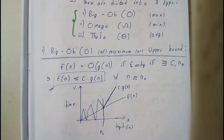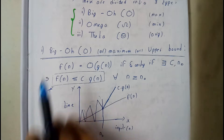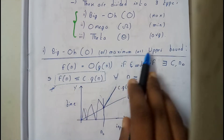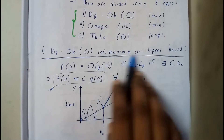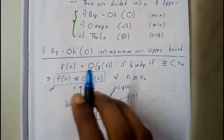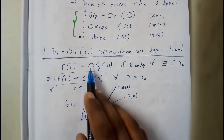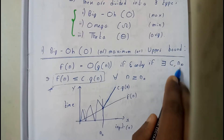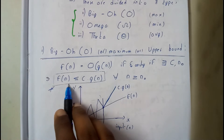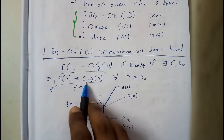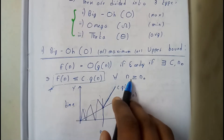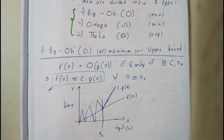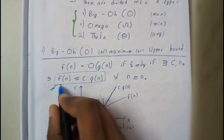Big O — also called maximum or upper boundary. It is defined as: f(n) = O(g(n)) if and only if there exists c and n₀ such that f(n) ≤ c·g(n) for all n greater than or equal to n₀. This is how the statement is defined, and this will be our main condition.